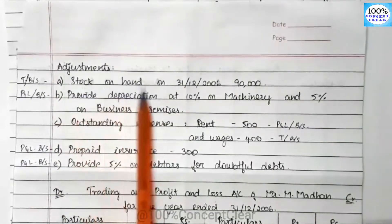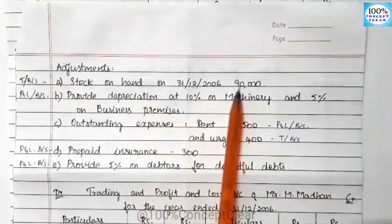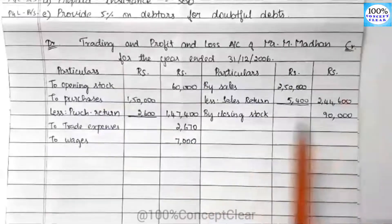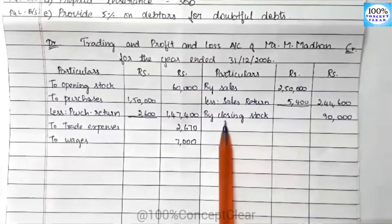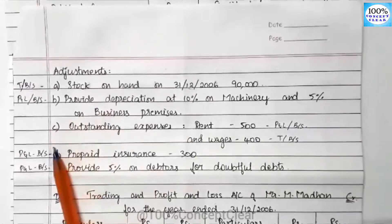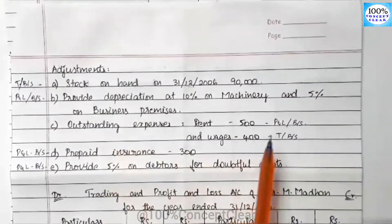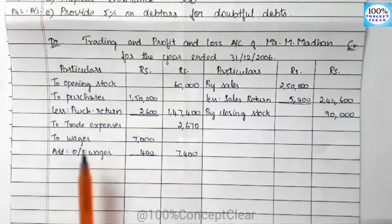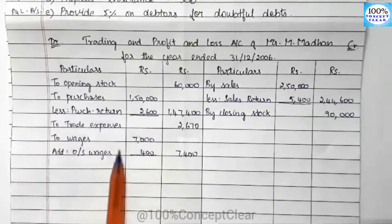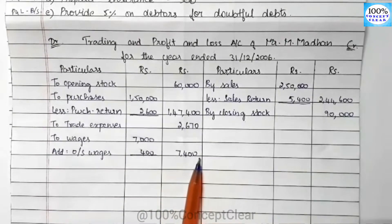In the adjustments, the first one is stock on hand on 31-12-2006 — the closing stock is $90,000, which goes to the Trading account credit side. Next, we have wages with outstanding wages of $400. The outstanding amount is added, so wages $7,000 plus outstanding wages $400 gives the answer $7,400.